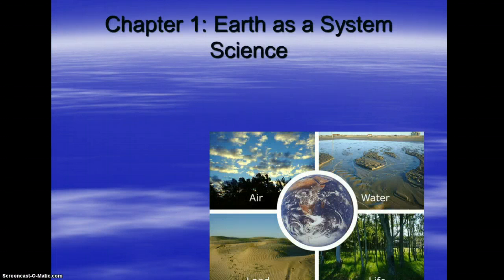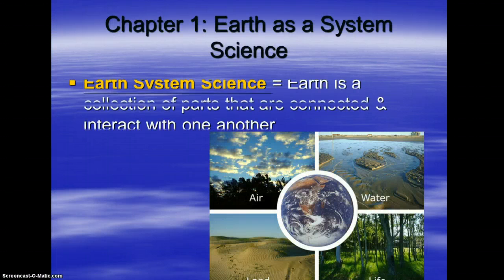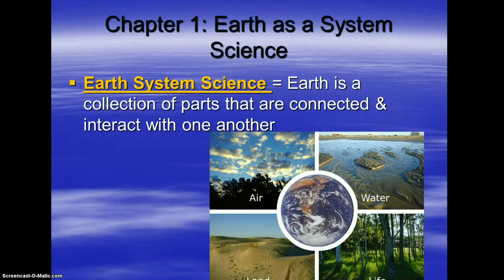Earth as a system science — there's a term that goes with that: Earth, system, science. Three words. Earth is a collection of parts that are connected and interact with one another. So you can see here in the image you've got air, water, land, and life, all interconnected for our planet Earth.